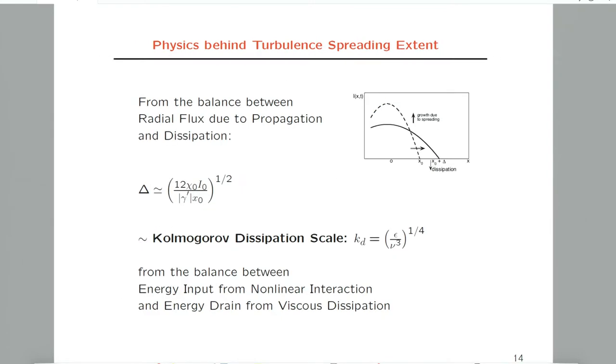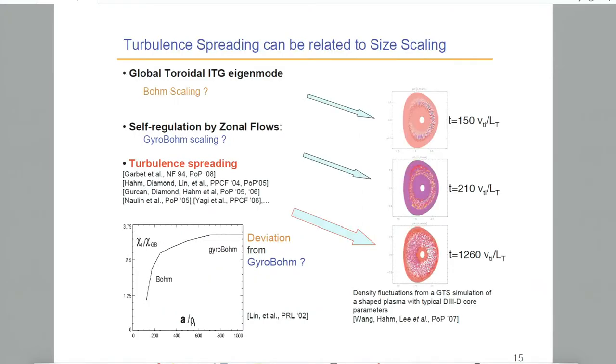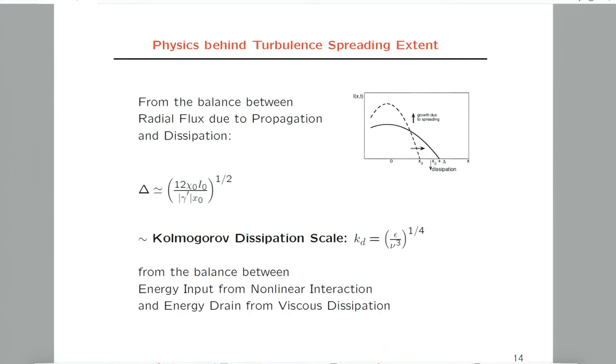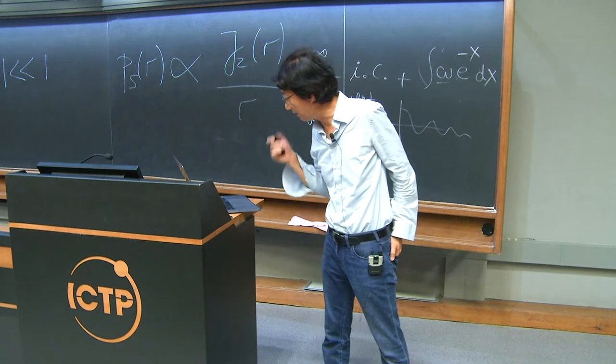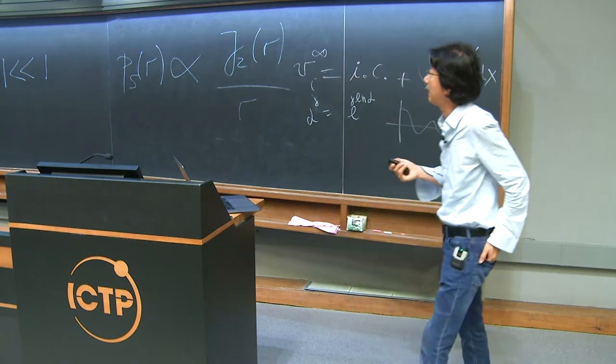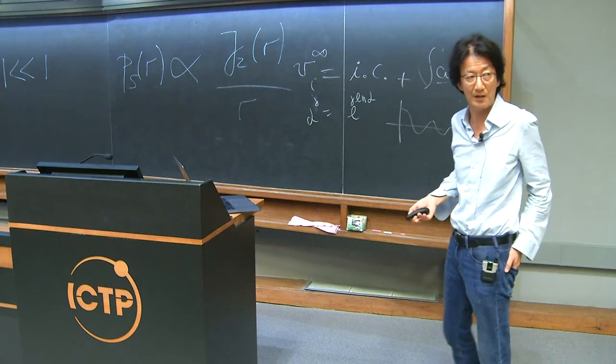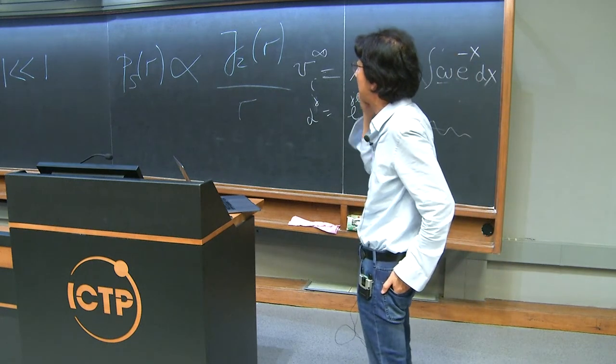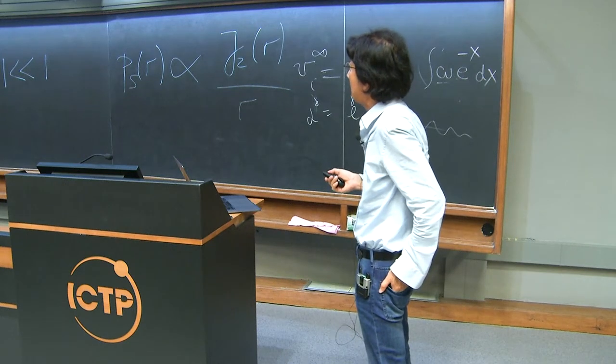This simple relation is only gotten from balancing the radial flux of turbulence from the very turbulent zone into the dissipation region. We heard from previous speakers that the Kolmogorov dissipation scale plays a very important role, even in complicated situations like when viscosity is not uniform in space.